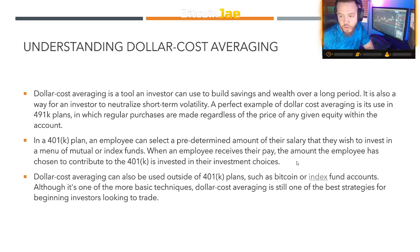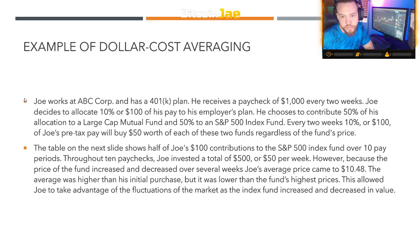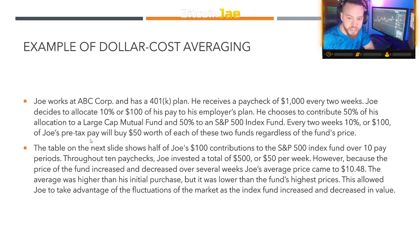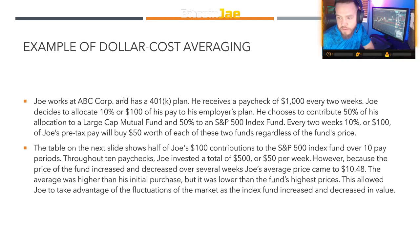Here's an example of dollar cost averaging: Joel works at ABC Corp and has a 401k plan. He receives a paycheck of $1,000 every two weeks and decides to allocate 10%, or $100, to his employer's plan — 50% to a large-cap mutual fund and 50% to an S&P 500 index fund. Every two weeks, $50 worth of each fund is purchased regardless of the fund's price.